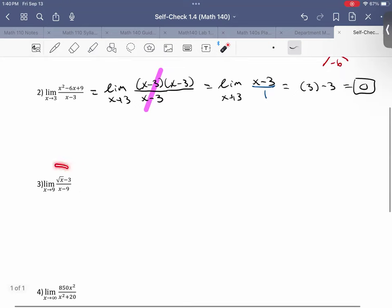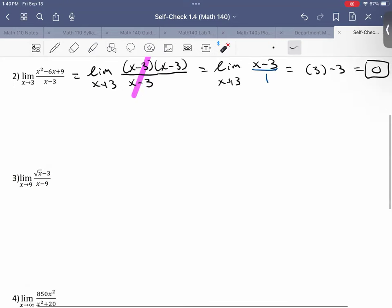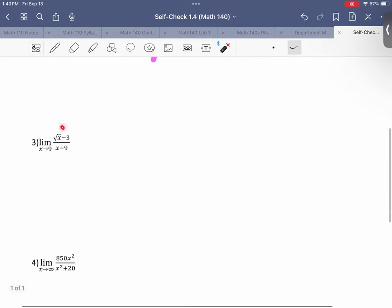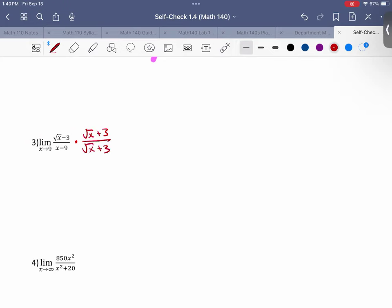So this one is we have a square root in the top. So we got to rationalize the numerator.